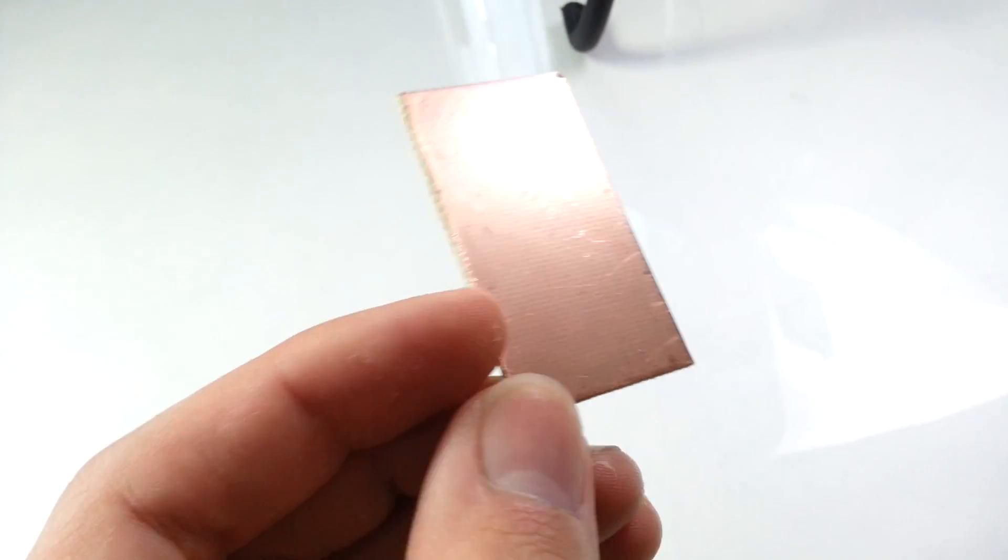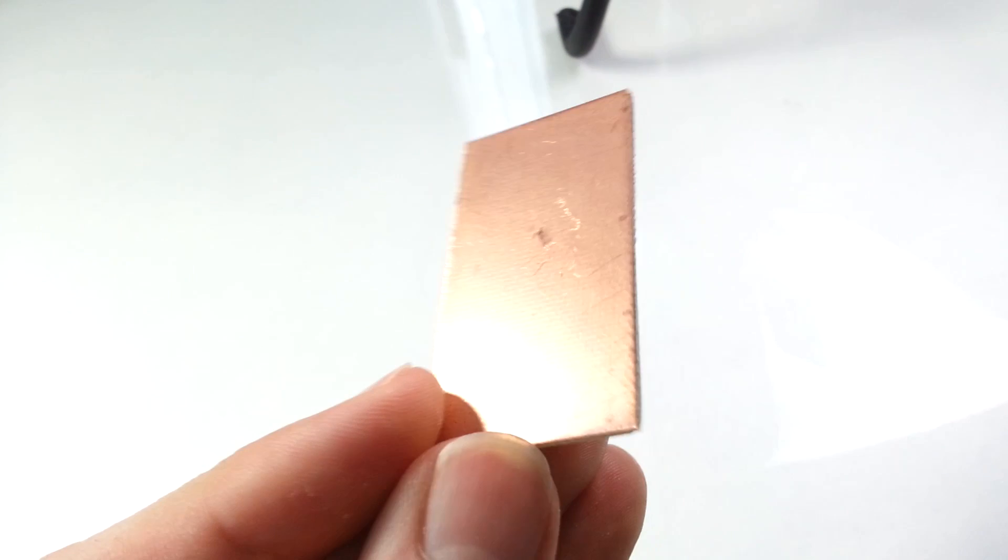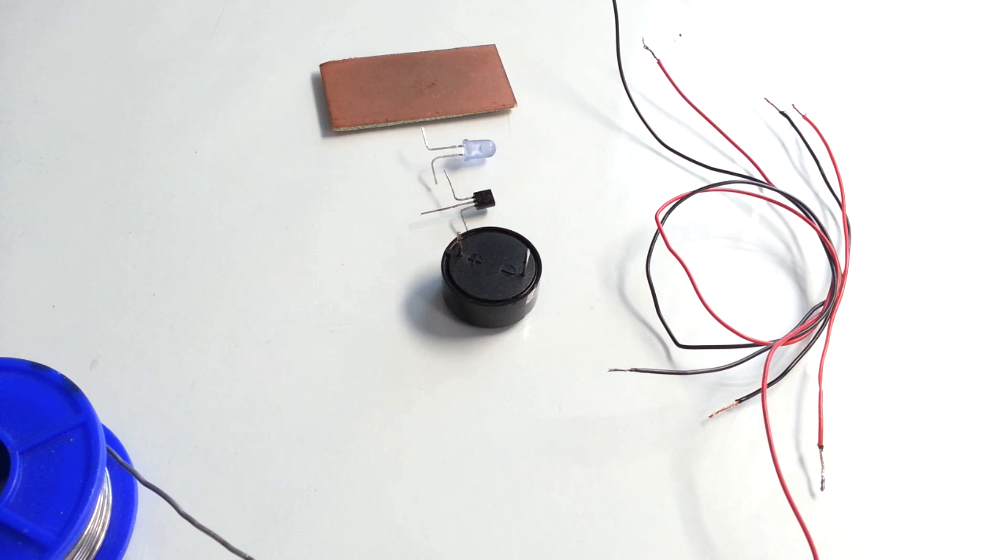Also we'll need a piece of single-sided copper PCB board. And for the powering we'll need a 12V power source. First let's solder components together, and then I'll show you how to make a rain sensor from the PCB board.